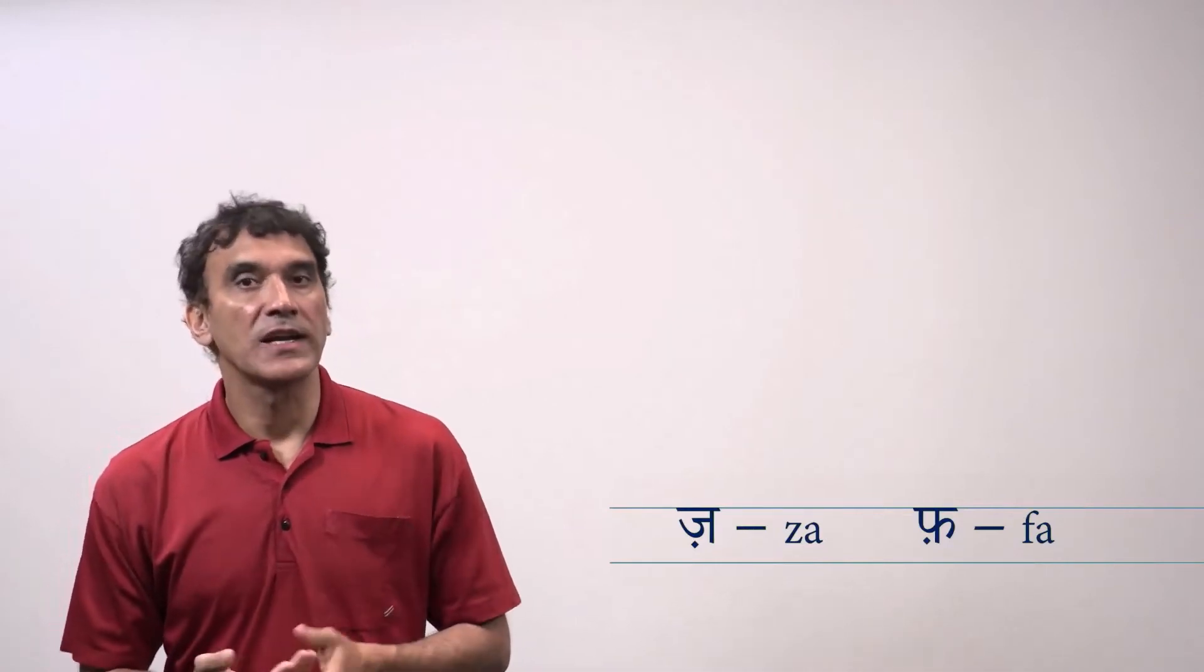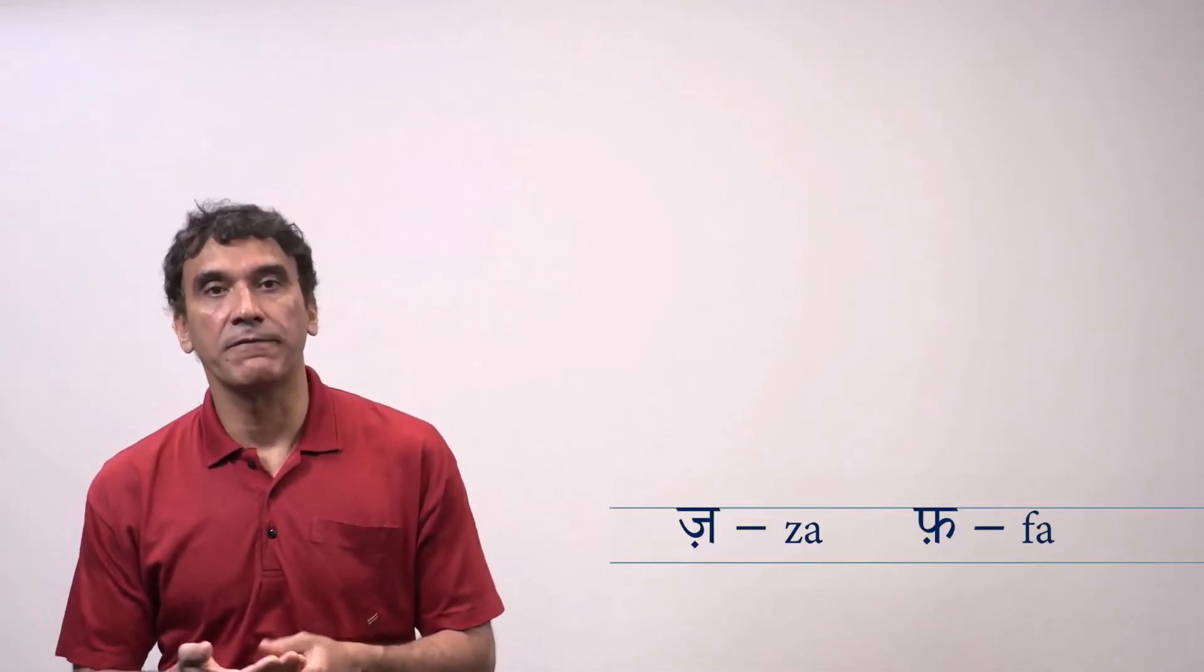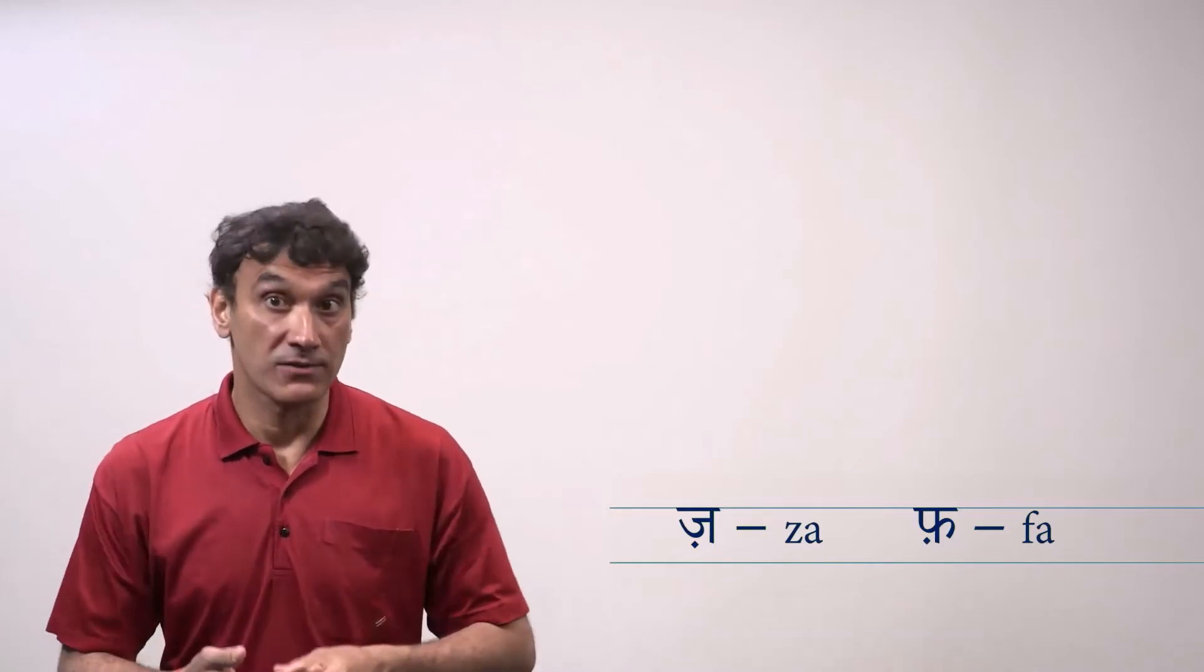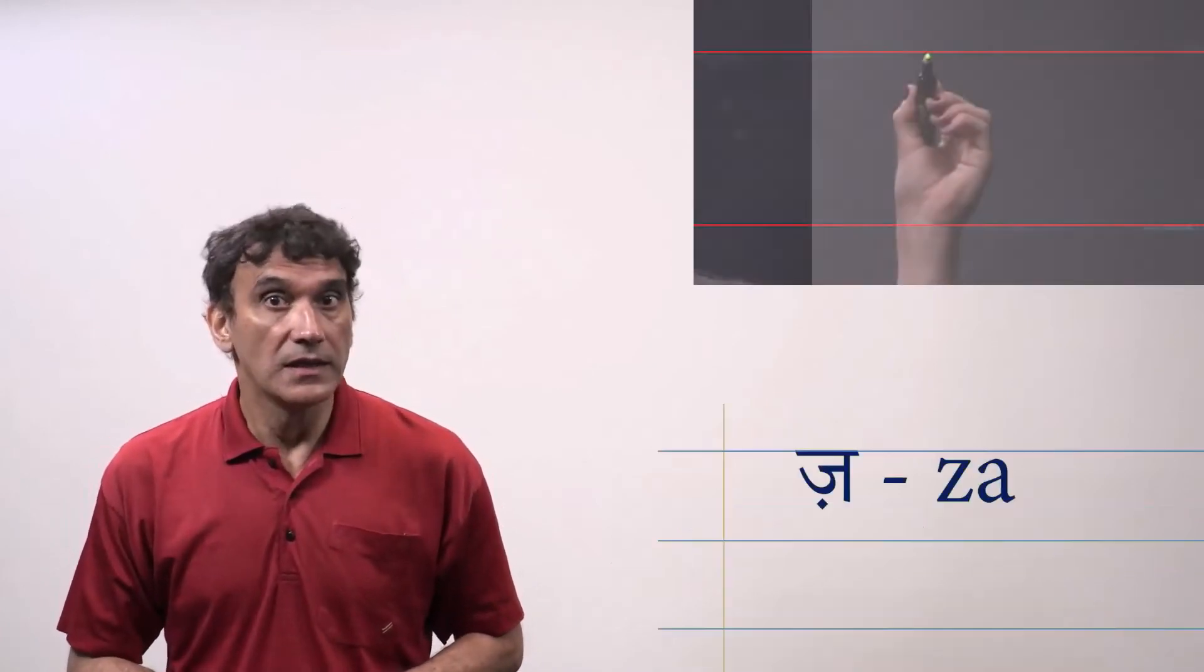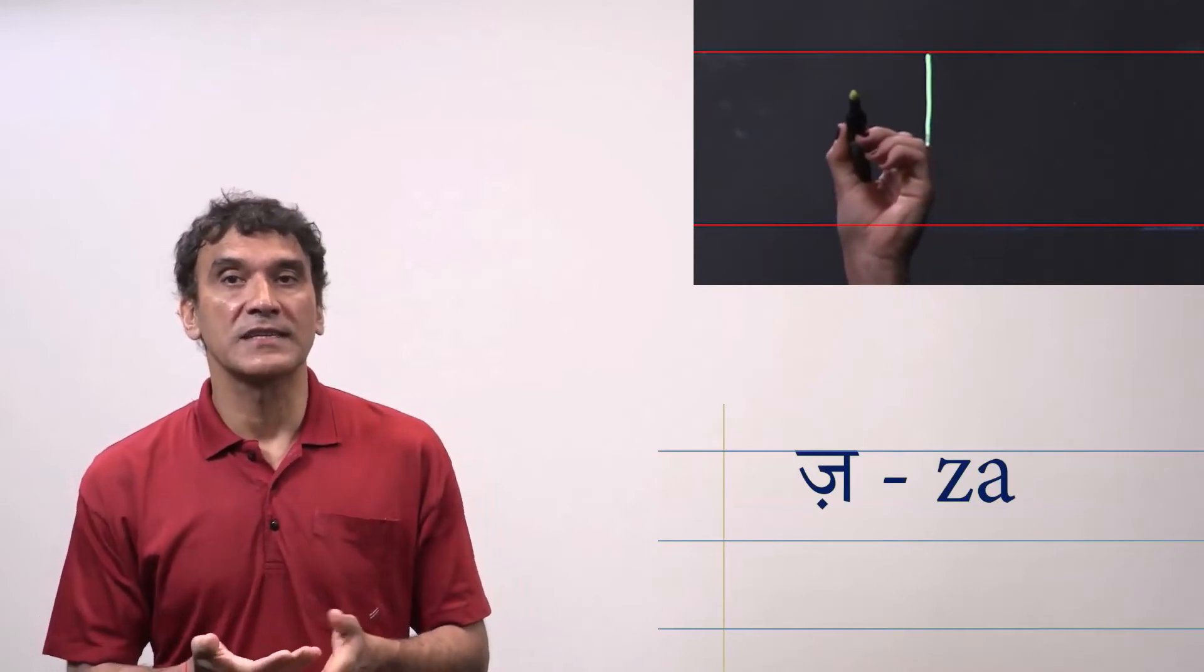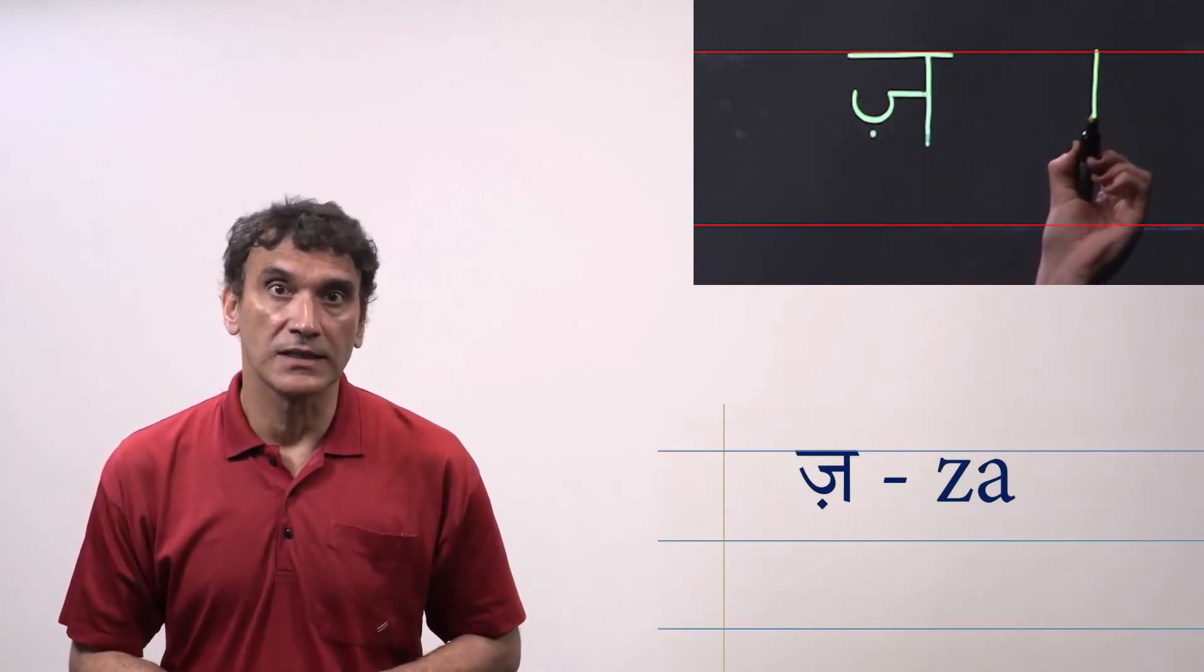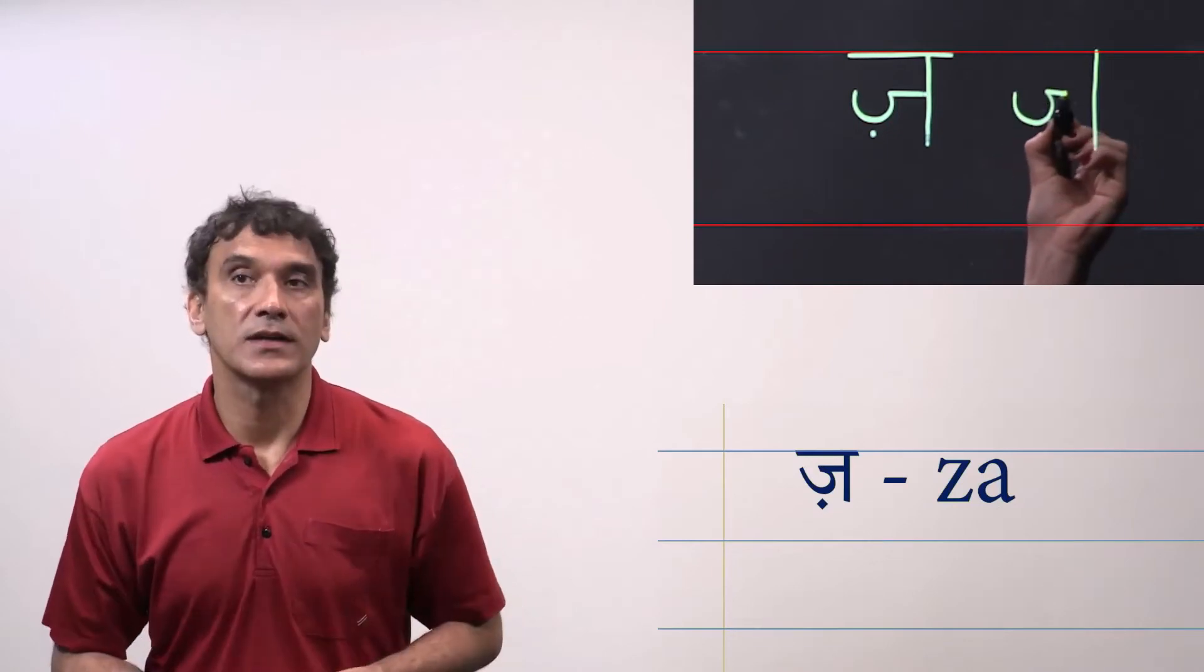Let's take the next two relatively common sounds Z and F. The traditional Devanagari does not have these otherwise rather common sounds. The Z sound in Hindi is represented by the consonant J with the dot Anukta underneath. And here you can see how it is written.